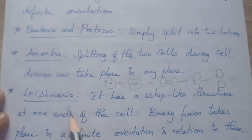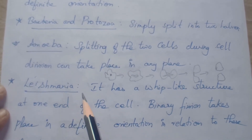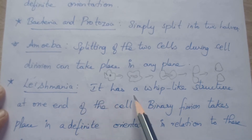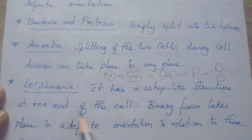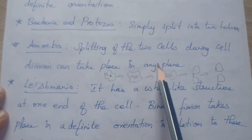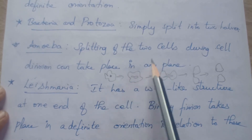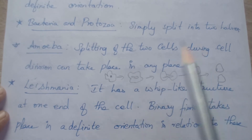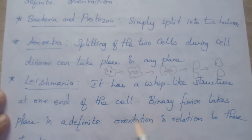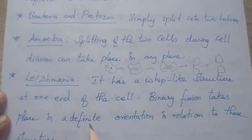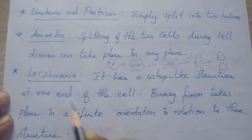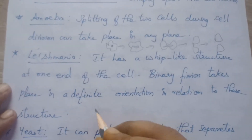In Leishmania — which causes Kala-azar, as studied in the ninth standard — it has a whip-like structure at one end. It does not follow random orientation like amoeba. In the case of Leishmania, binary fission takes place in a definite orientation in relation to this whip-like structure.